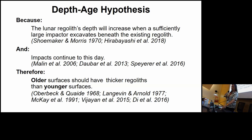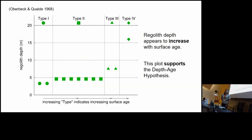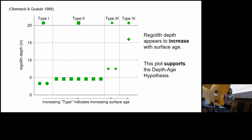I'll now show data supporting the depth-age hypothesis. Oberbeck and Quade in 1968 used Lunar Orbiter data to divide images into different surface types based on crater counting — type one is the least cratered and youngest, up to type four with the most craters. Using a particular method to determine regolith depth on each surface type, they found that regolith depths increase with surface age, clearly supporting the depth-age hypothesis.